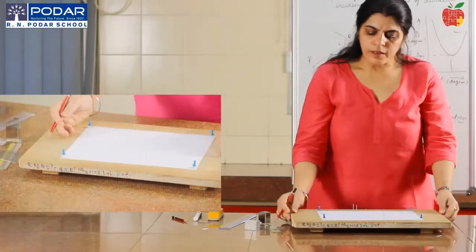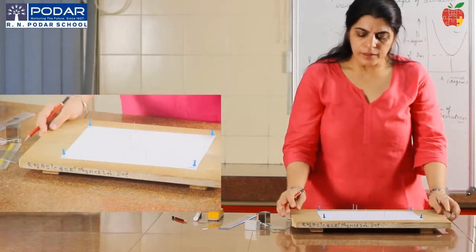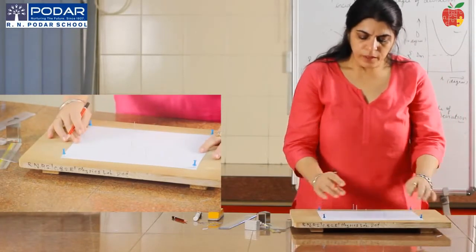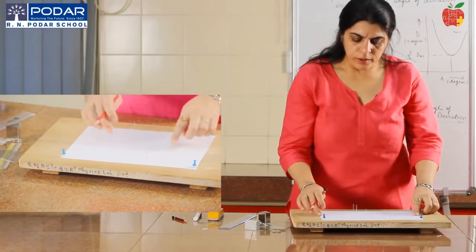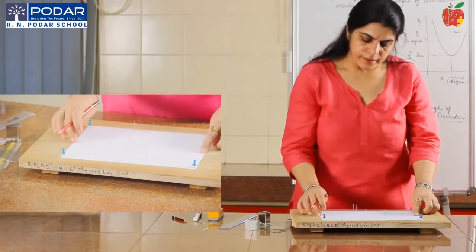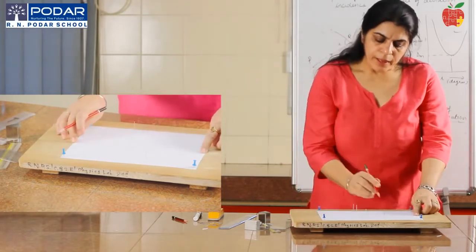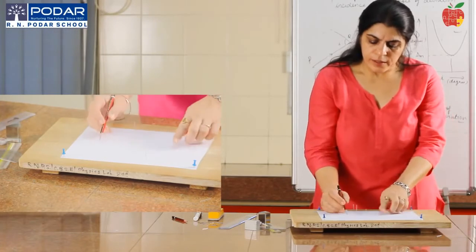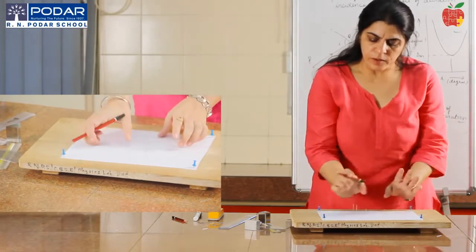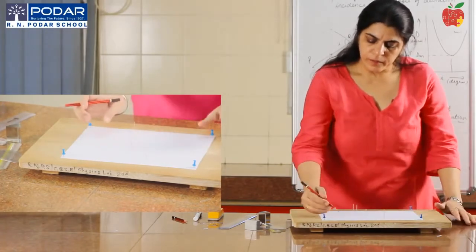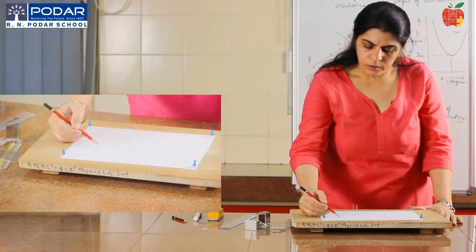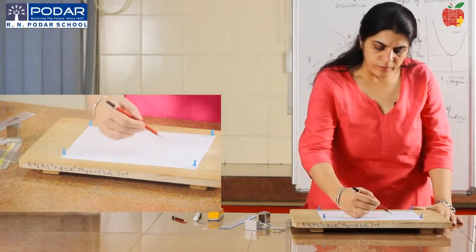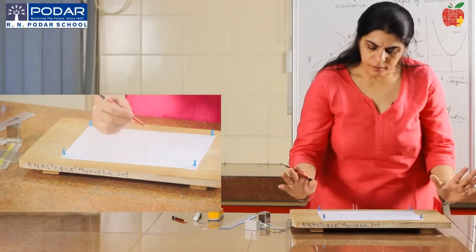Here we have taken a board on which we have fixed a white paper. We have drawn a horizontal line and marked three points O, X, and Y at a distance of around five to six centimeters from each other. Then we draw normals: O-N1, X-N2, and Y-N3.